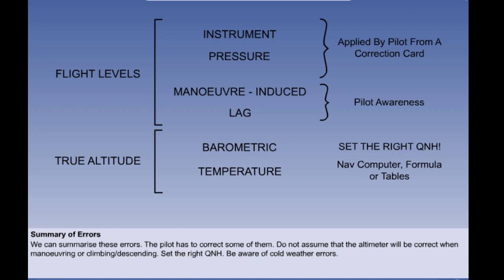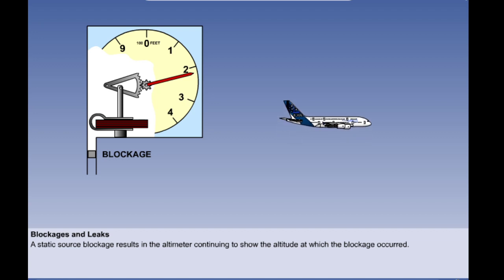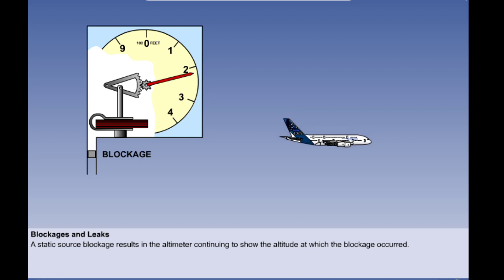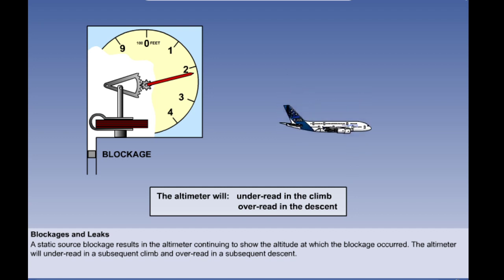However, there are also failures of the static system to consider which lead to an unserviceable instrument. Let's now consider what will happen to our pressure altimeter if the static source becomes blocked. At the time of the blockage, the static pressure which was present in the system will be trapped and any changes in static pressure which subsequently occur outside the blockage will not be sensed. In other words, the blockage will cause the altimeter to freeze at that indicated altitude. It will under-read in a subsequent climb and over-read in any subsequent descent.